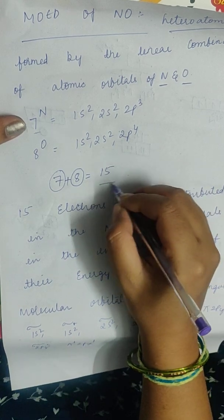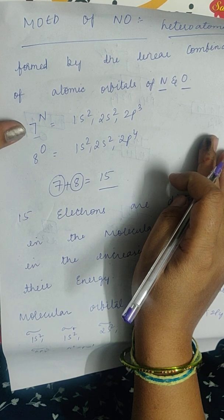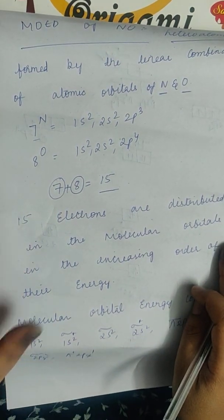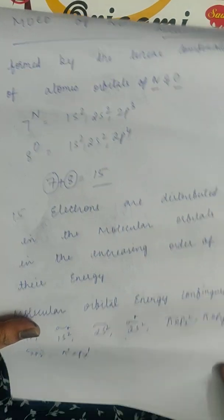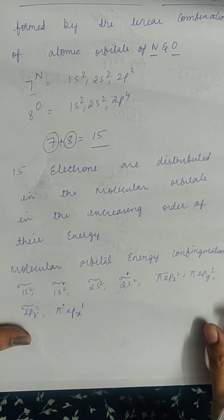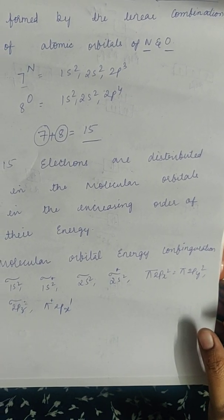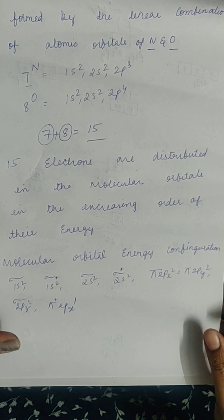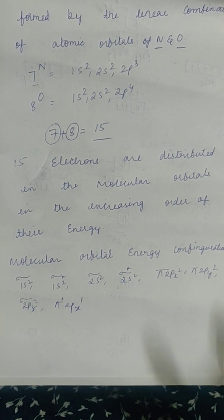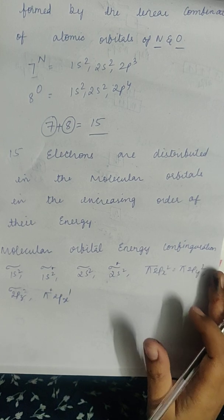So the total number of electrons is 15. These 15 electrons are distributed in the molecular orbitals in the increasing order of their energy. It follows Aufbau's principle and Hund's rule during the distribution of electrons in the molecular orbitals. So now let us look at how these 15 electrons are arranged in the molecular orbitals.